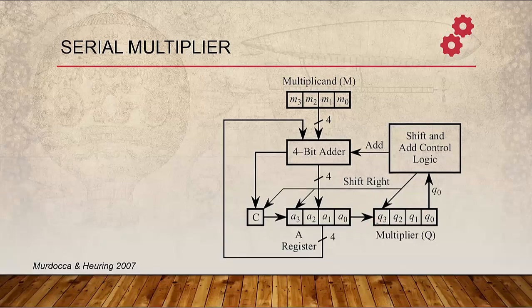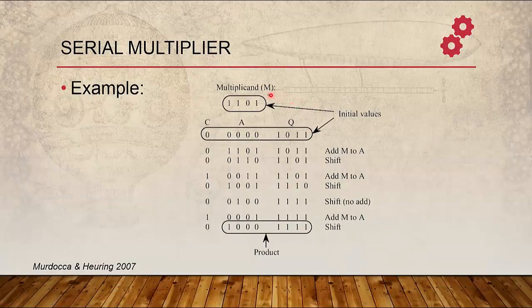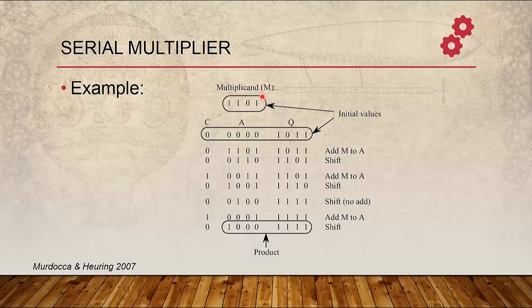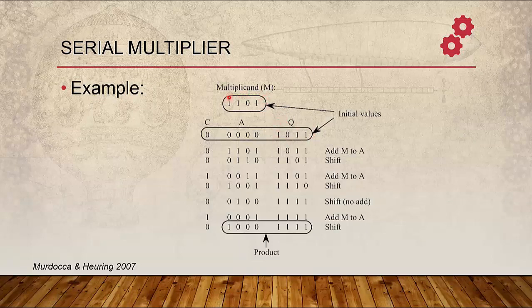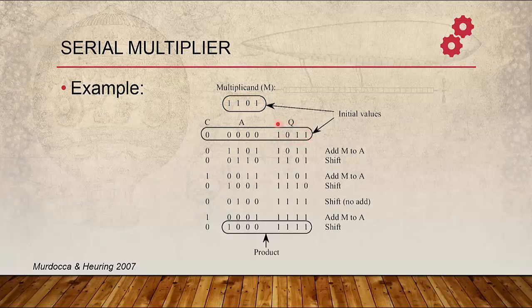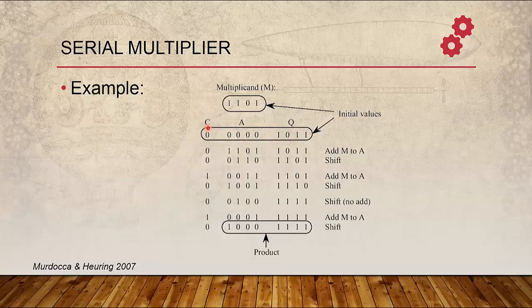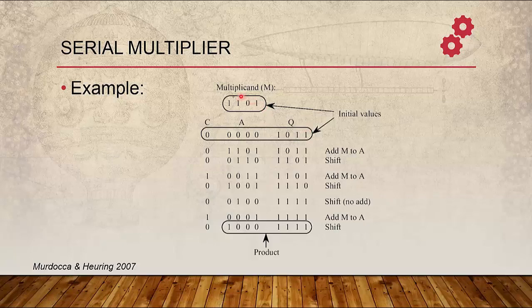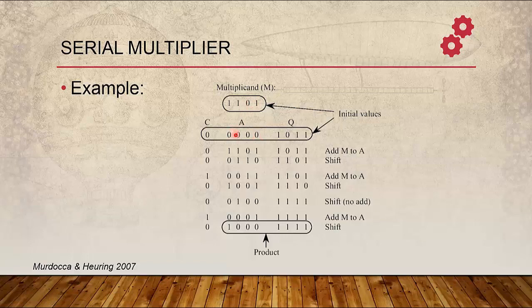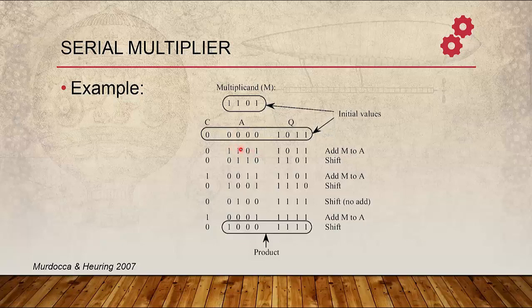Let us take one example. Now we are multiplying 13 and 11. 13 is the Multiplicand, 11 is the Multiplier. This is the initial stage: register A is 0, Carry is also 0. We will look at LSB in Q which in this case is a big one. If it is so, we add Multiplicand to register A. So 13 add to 0, we get 13. No Carry.